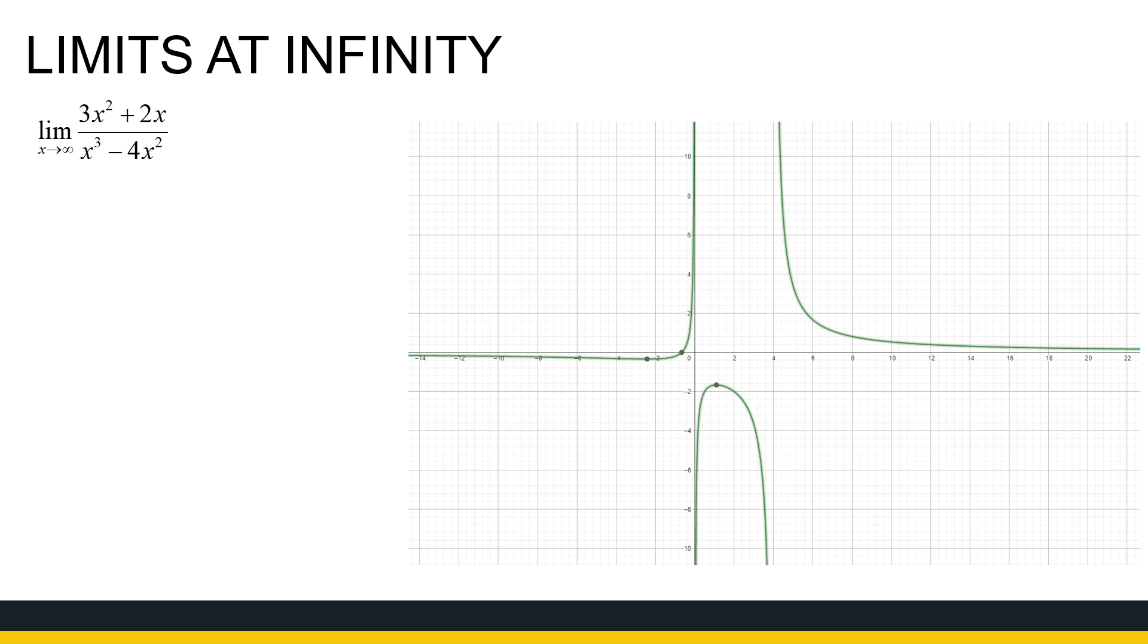As x goes to infinity, we see this graph has a horizontal asymptote at y equals 0. It's similar for x approaching minus infinity. Algebraically, I see the highest exponent is to the power 3, so I'm going to multiply the numerator and denominator with 1 over x to the power 3.